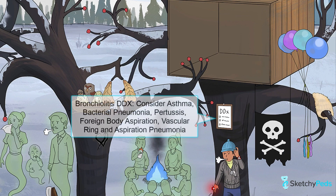With a consistent history and supporting physical exam findings, you're just about ready to diagnose your patient with bronchiolitis, but it's always a good idea to run through a differential quickly to ensure you're not missing something. Common differentials for bronchiolitis include viral-triggered asthma exacerbation, bacterial pneumonia, pertussis, and foreign body aspiration. Head on over to the differential diagnosis menu to learn more.